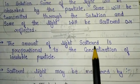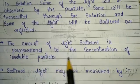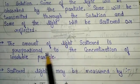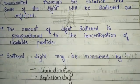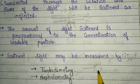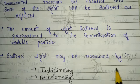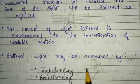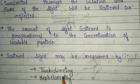The amount of light scattered is proportional to the concentration of insoluble particles. Scattered light may be measured by turbidometry and nephelometry. When electromagnetic radiation strikes on a sample, some lights are scattered from the sample, and that scattered light may be measured by turbidometry and nephelometry.